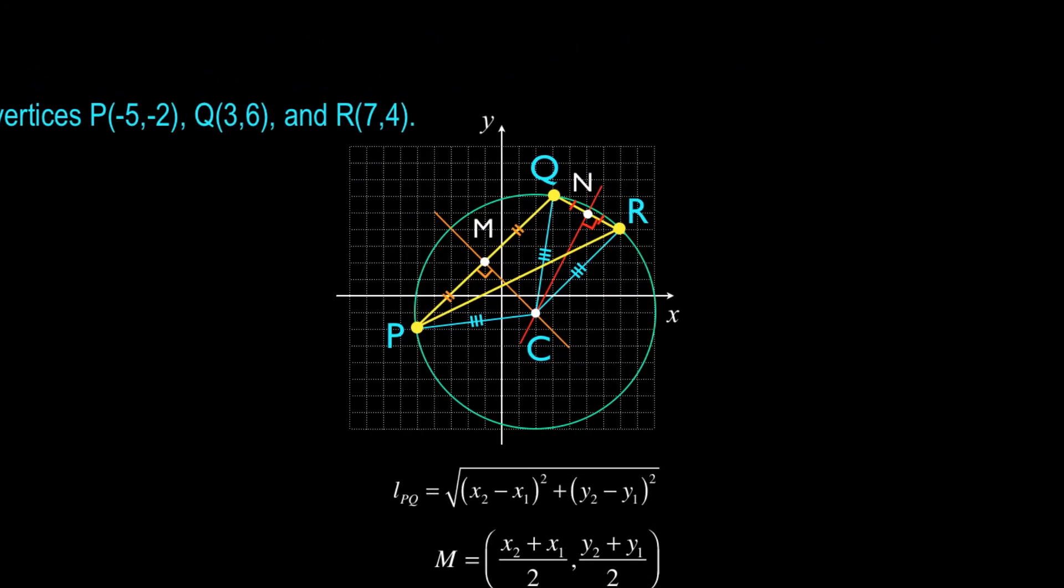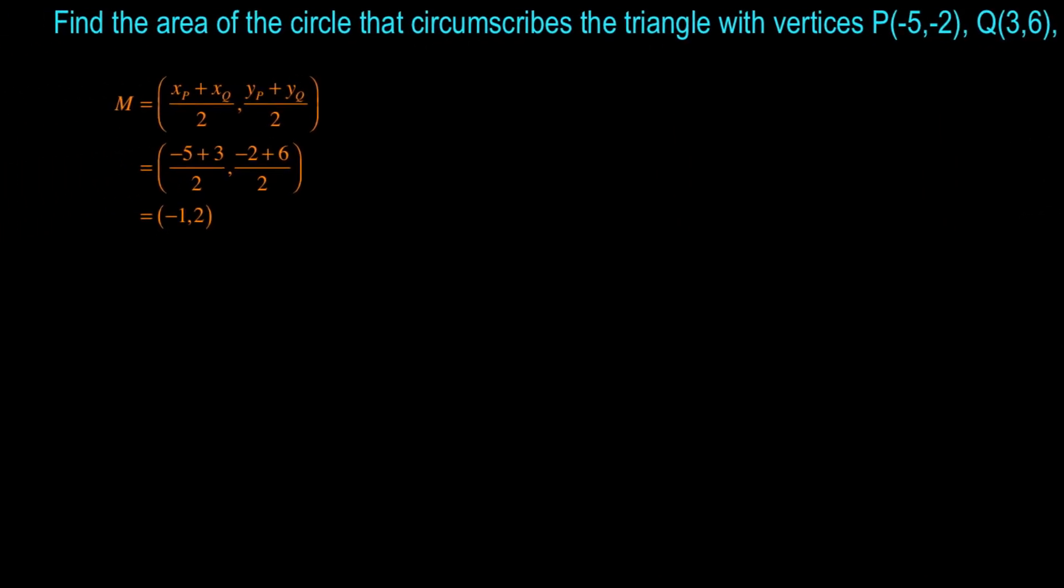Once again, I drew my diagram fairly accurately, and it looks like M does have coordinates pretty darn close to (-1, 2). Now using that point, and the slope of line segment PQ, I should be able to get the equation of the line passing through M and C, and it's going to work very much like what we did in the last example.